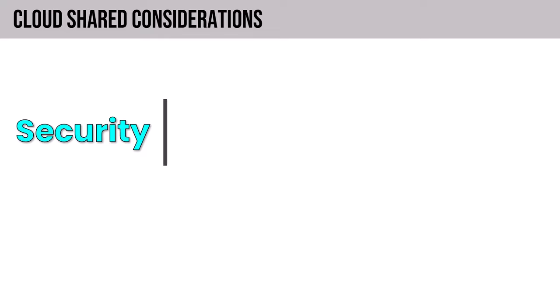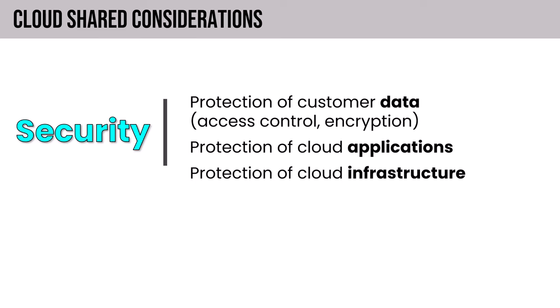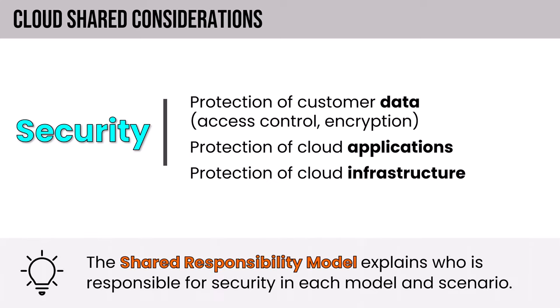Security as a shared consideration includes protection of customer data, access control, and data encryption. Protection of cloud applications against attacks — for example, distributed denial of service attacks at scale. Protection of cloud infrastructure: the underlying servers, storage, and network running the environment. The shared responsibility model explains who is responsible for security in each model and scenario.